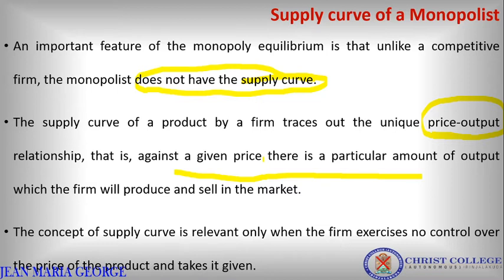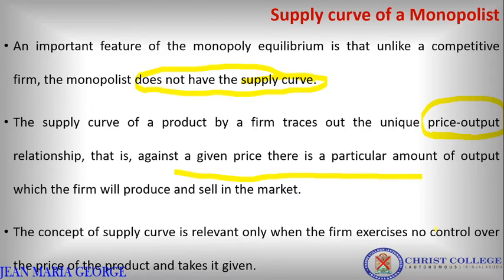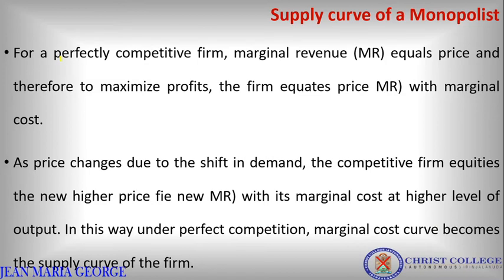The supply curve concept is relevant in a competitive market situation where firms are price takers. In that market, the price is already fixed by the market, and the firm decides how much output to produce at that fixed price. But in a monopoly situation, the firm is a price maker — the monopolist has control over the price — so the supply curve concept is not directly relevant here.